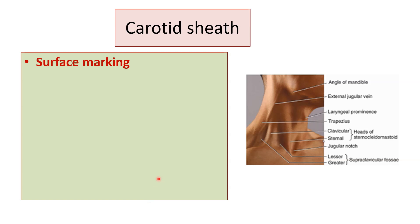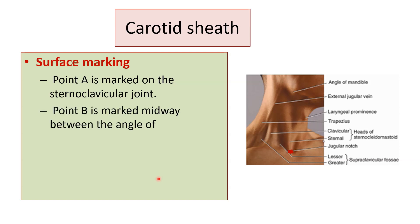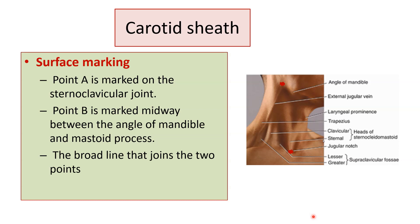Regarding surface marking for the carotid sheath: mark point A on the sternoclavicular joint and point B midway between the angle of the mandible and the mastoid process. Join these two points with a broad line to indicate the position of the carotid sheath.